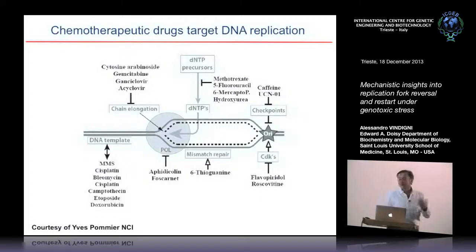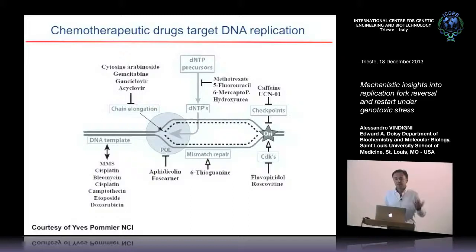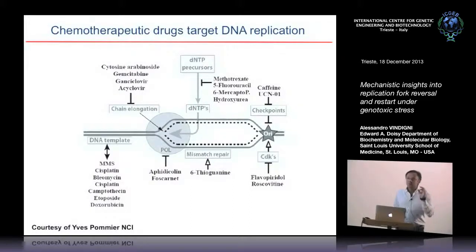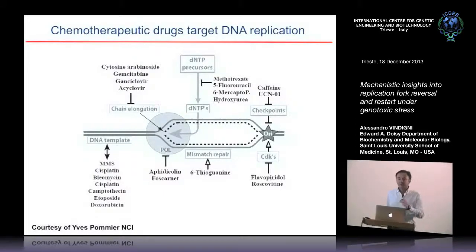It's perhaps not surprising that many of these compounds are actively used as chemotherapeutic drugs. The rationale behind their use for cancer treatment is simple: by targeting DNA replication, they are likely to target actively proliferating cancer cells. However, for many of them, how they inhibit replication — or how the replication machinery responds to their insult — is still an open question.